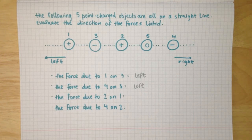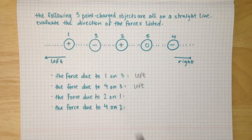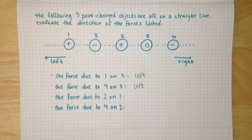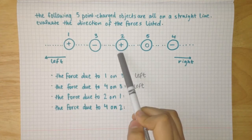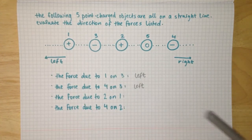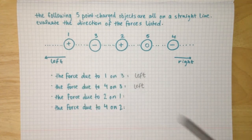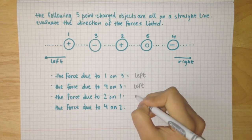The next one is the force due to two on one. Two and one are both positive — they're like charges, and like charges repel each other. So two is wanting one to move away from it, which is towards the left. This one will be left as well.